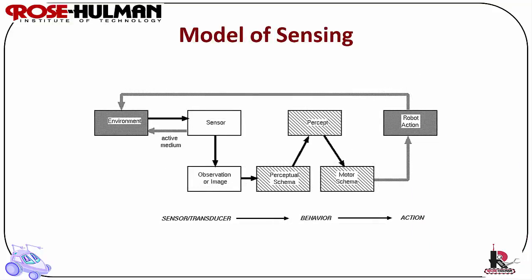Model of sensing: the perceptual schema embodies the sensing. Ron Arkin created schema-based navigation around 1989. The motor schema serves as the basic unit of behavior specification for the navigation of a mobile robot. There are multiple concurrent processes that operate in conjunction with associated perceptual schemas and contribute independently to the overall concerted action of the vehicle. In the model, the environment feeds the sensor which gives an observation or image, from which a percept generates a perceptual schema, which creates the motor schema containing the motor action.